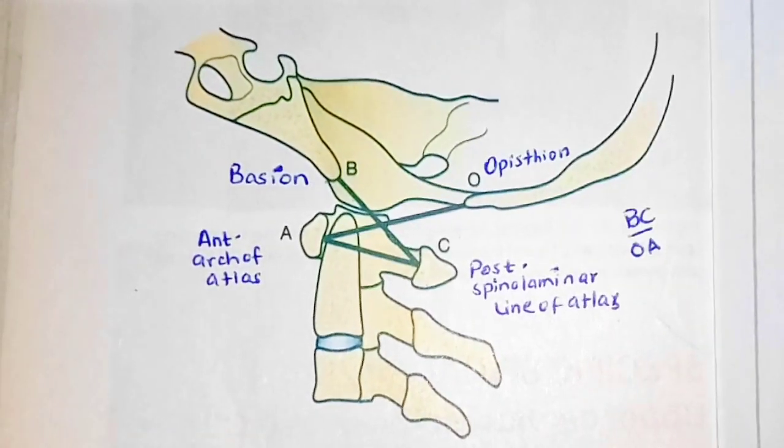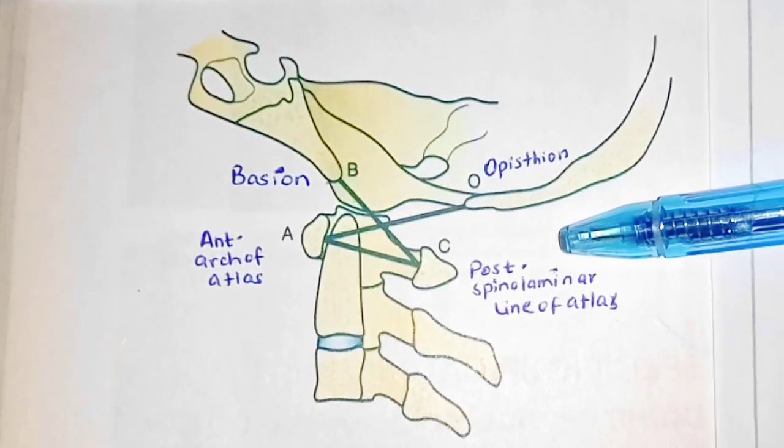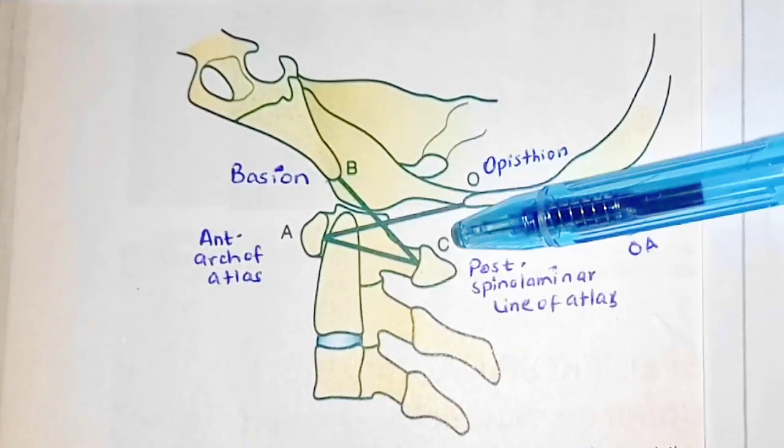Basically in the Power's ratio, this is a ratio of distances in the mid-sagittal plane and here it is a ratio of BC over OA.